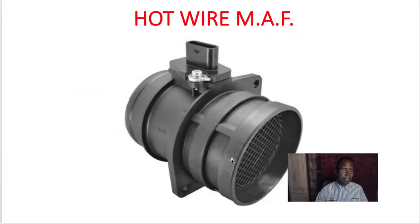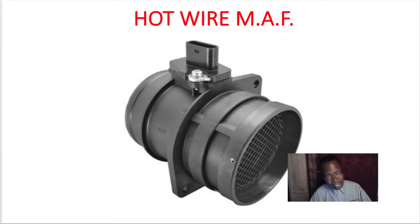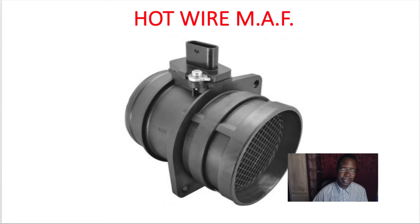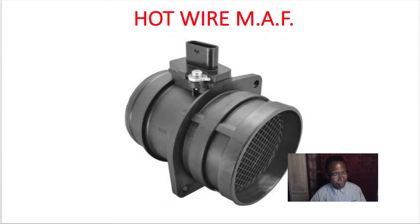The mass air flow sensor can also measure the density of the air and the temperature of the air — it's the hot wire type I just described. The advantage of this one is that it can determine both the temperature and the density of the incoming air.